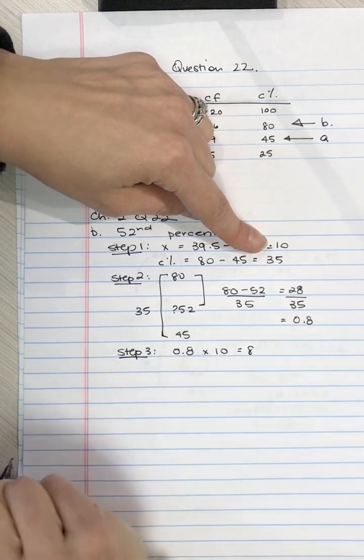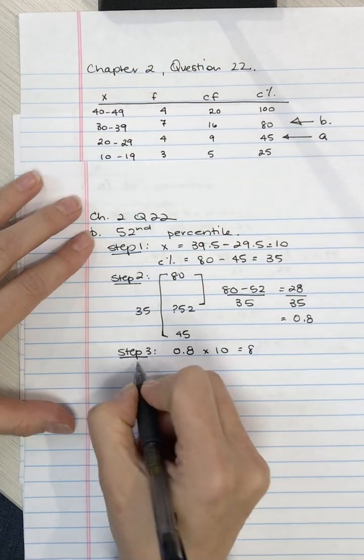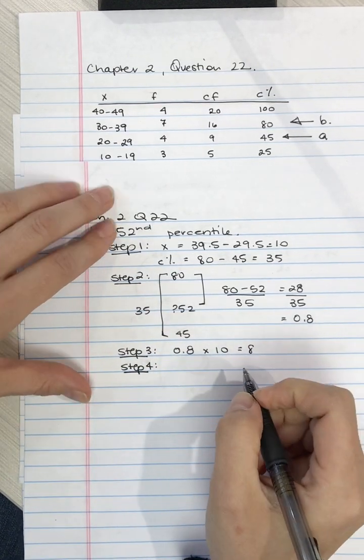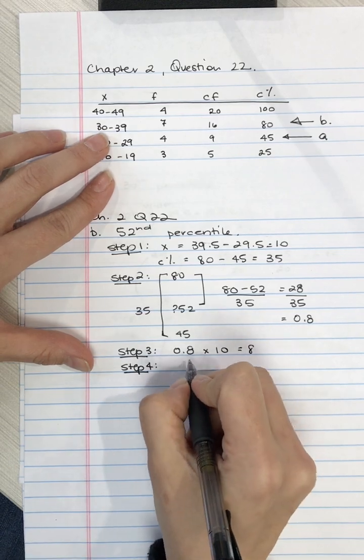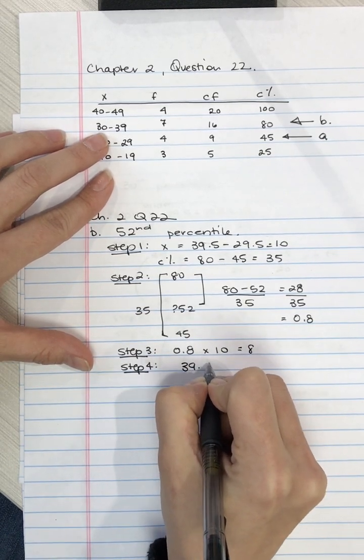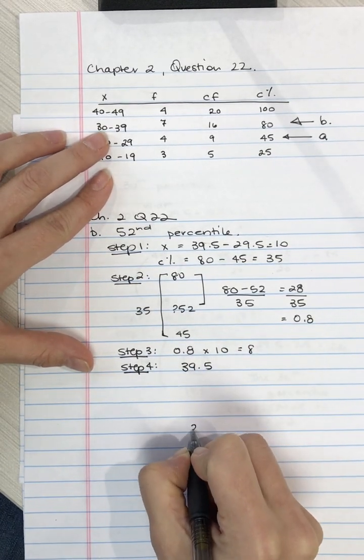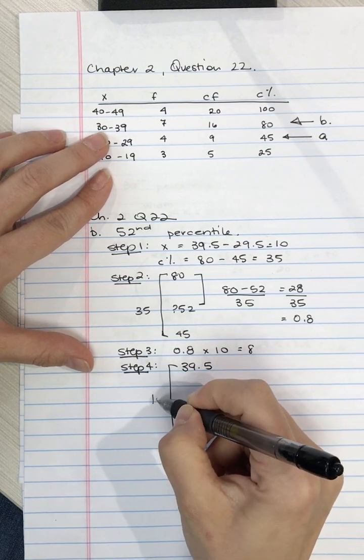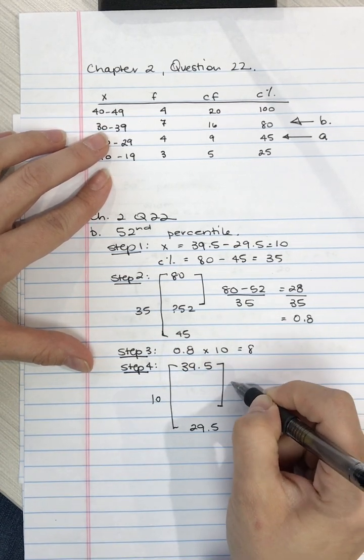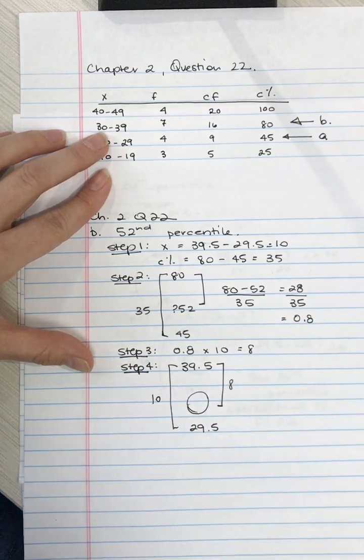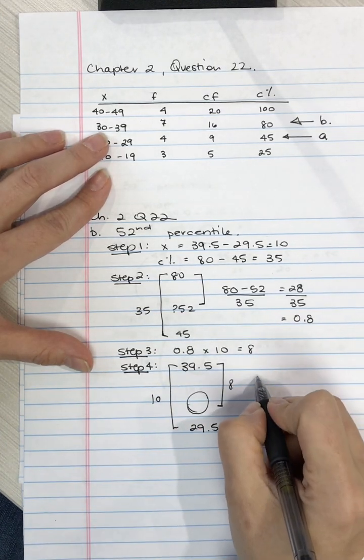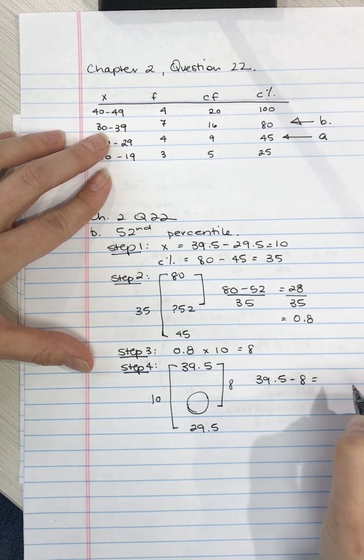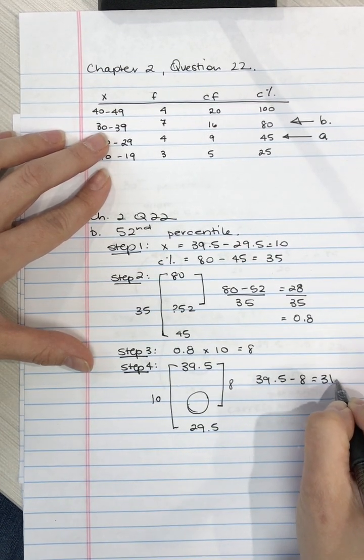Multiply it by 10 and we get 8. Step 4, the top of our interval is 39.5, the bottom of our interval is 29.5. We know that overall this is 10 and we want to go down 8 units to find this value.